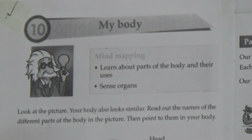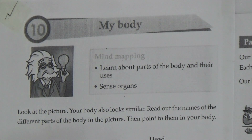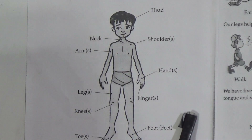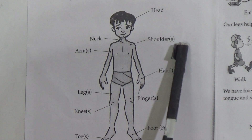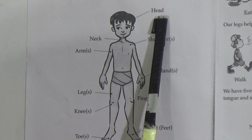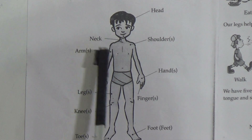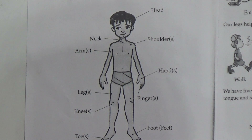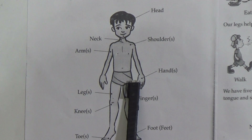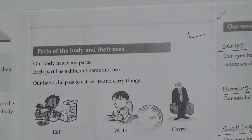The chapter name is 'My Body.' First of all, you have to look at the picture — your body also looks similar. Read out the names of the different parts of the body in the picture, then point to them on your body. Follow this class with your textbook. In the picture we can see: head, hands, fingers, foot, neck, arms, legs, knee, and toes — these are the different parts of our body.